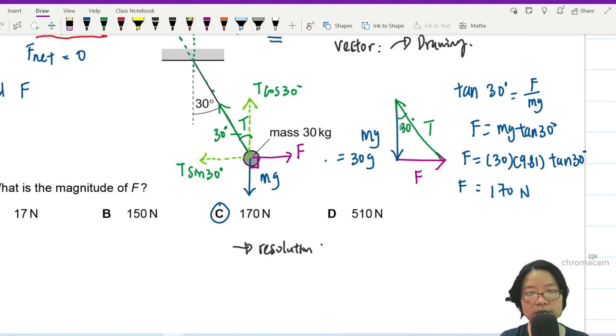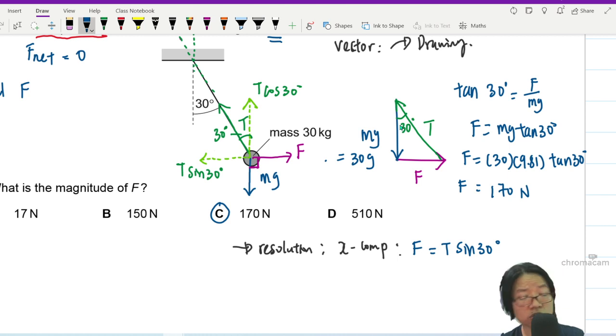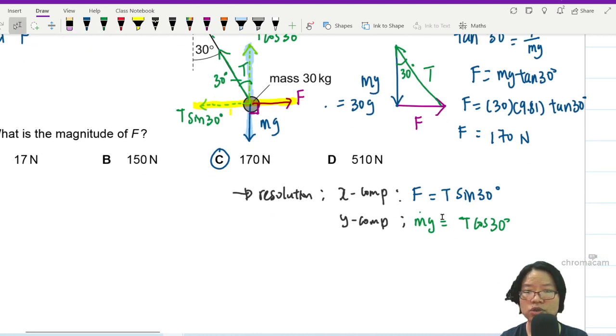So we will do the X component first. X component. This one would be F is equal to T sine 30. Now if you're lucky, you know tension, you can find F. But you don't know tension. Too bad. Repeat again. Y component. Upward force will be equal to downward force. So I'm going to write this one as mg is equal to T cos 30. This cancels, left and right cancels, here and here, will be equal such that the net force is zero. And upward force is equal to downward force so that the net force is zero.